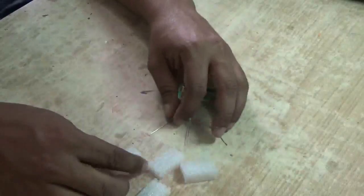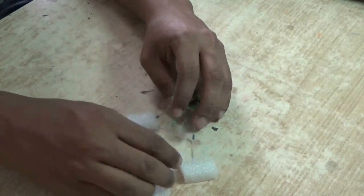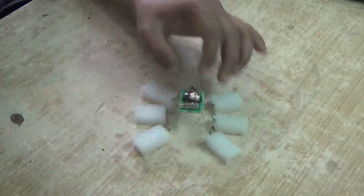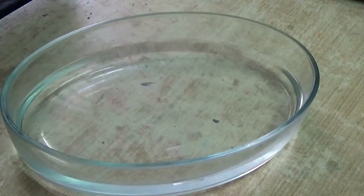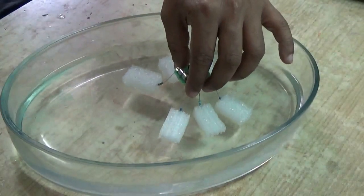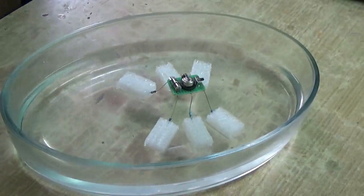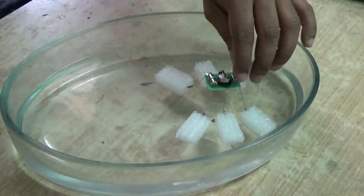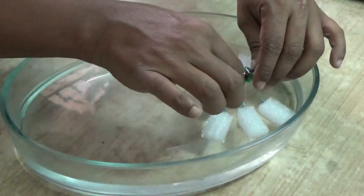Then attach the pieces to each leg. Thus the robot will have six legs which can float on water. Now take a bowl of water and place that robot on top of it. See, it's floating. Now if you switch on, because of the vibration it will start moving.